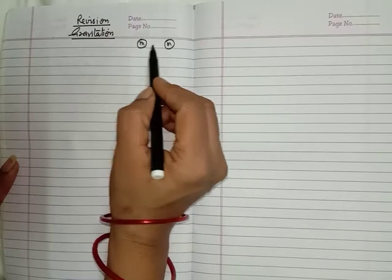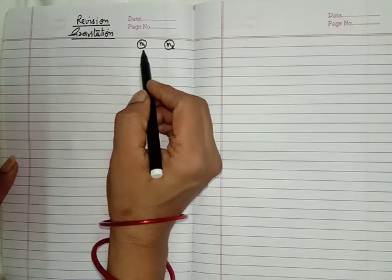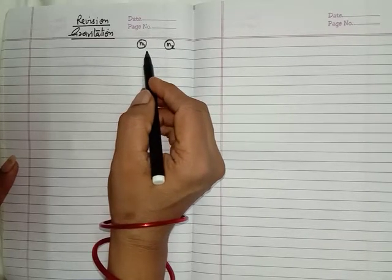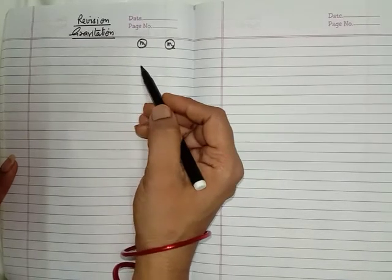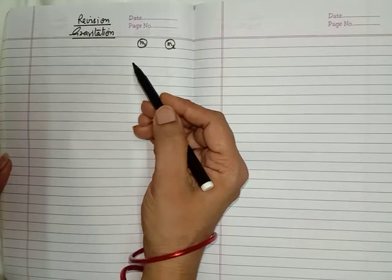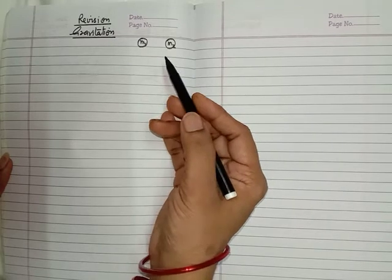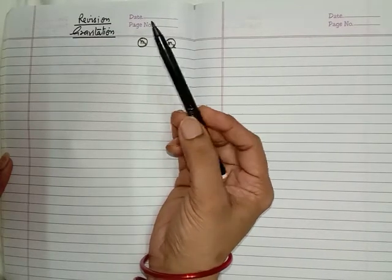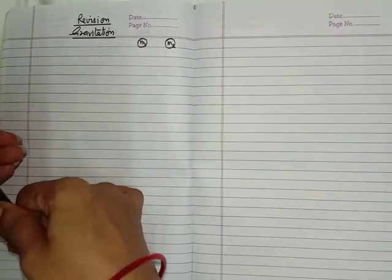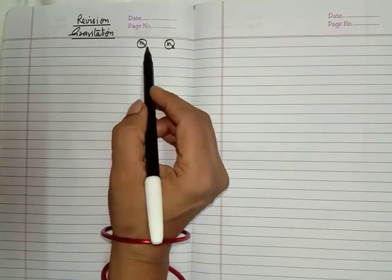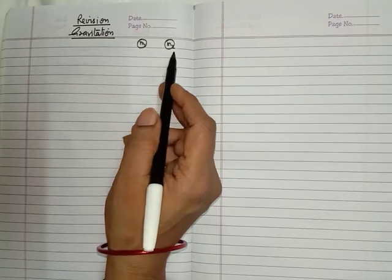Every object in this universe attracts another object with a force which is called gravitational force - every object like the planet with the sun. The gravitational force is also acting between the sun and the planets, and between planets and satellites. All the objects in this universe, even this sketch pen and this copy, have some attraction force which is called the gravitational force.